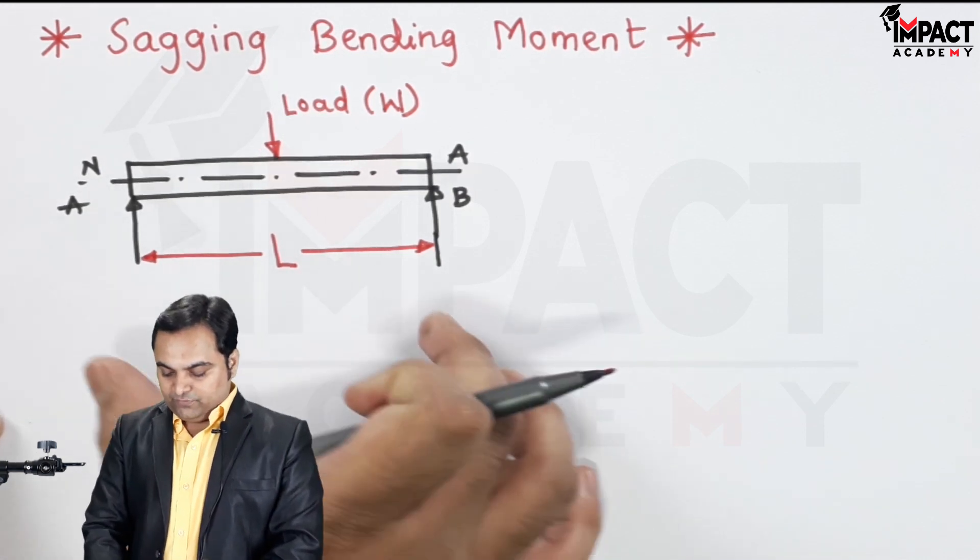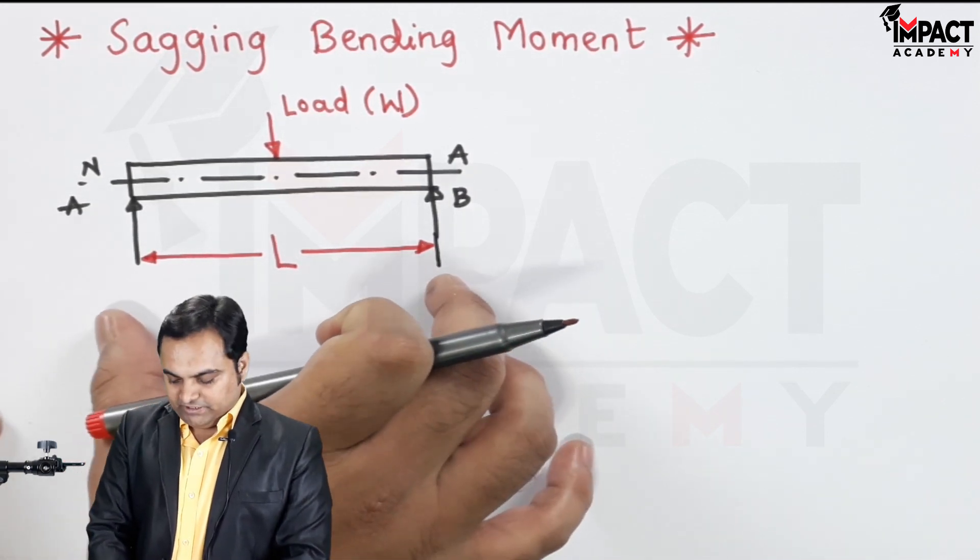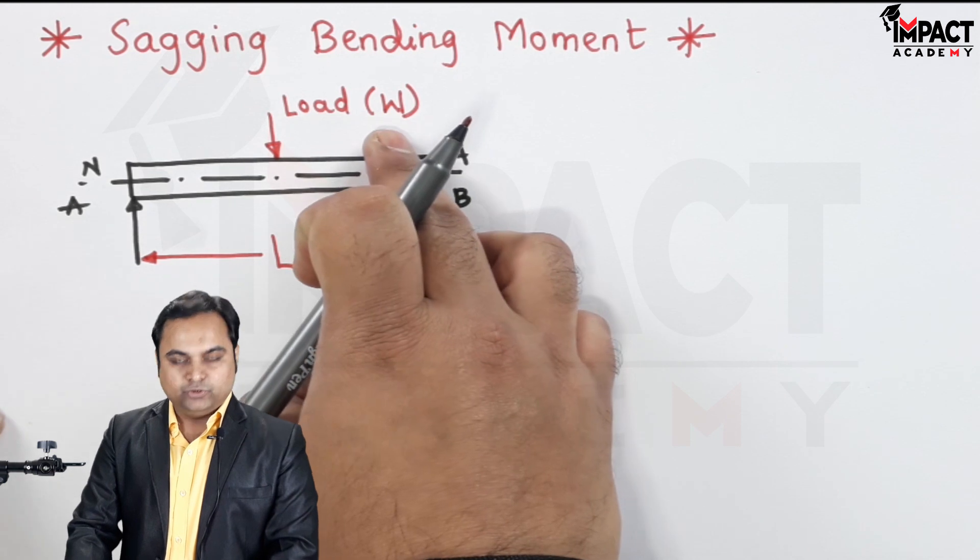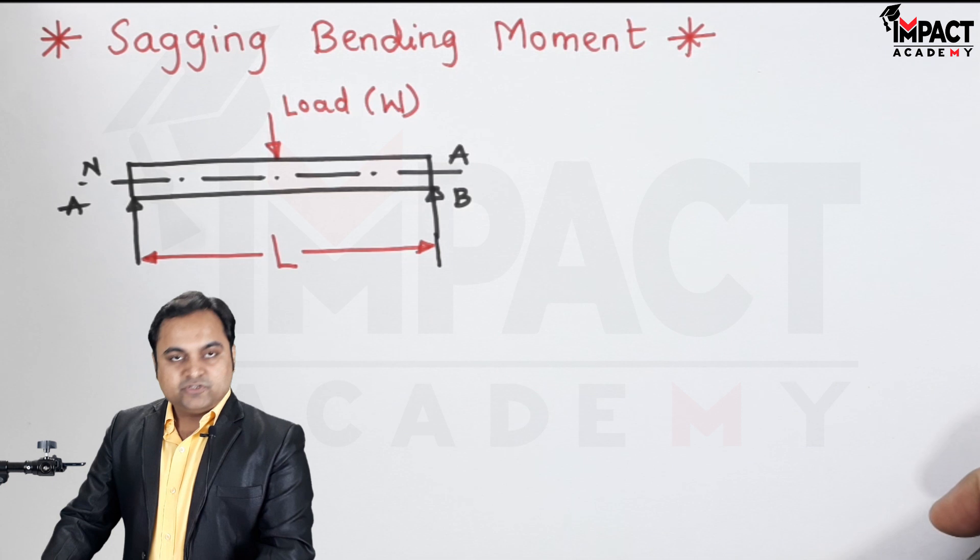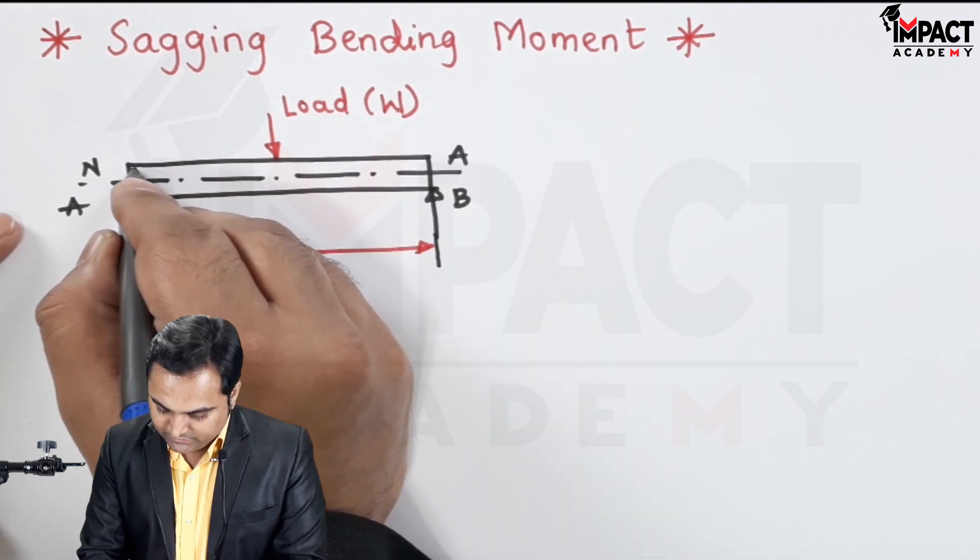So here there is an example in which there is a beam of length capital L subjected to a central point load W. And under the action of this load, the beam is going to bend in this way.